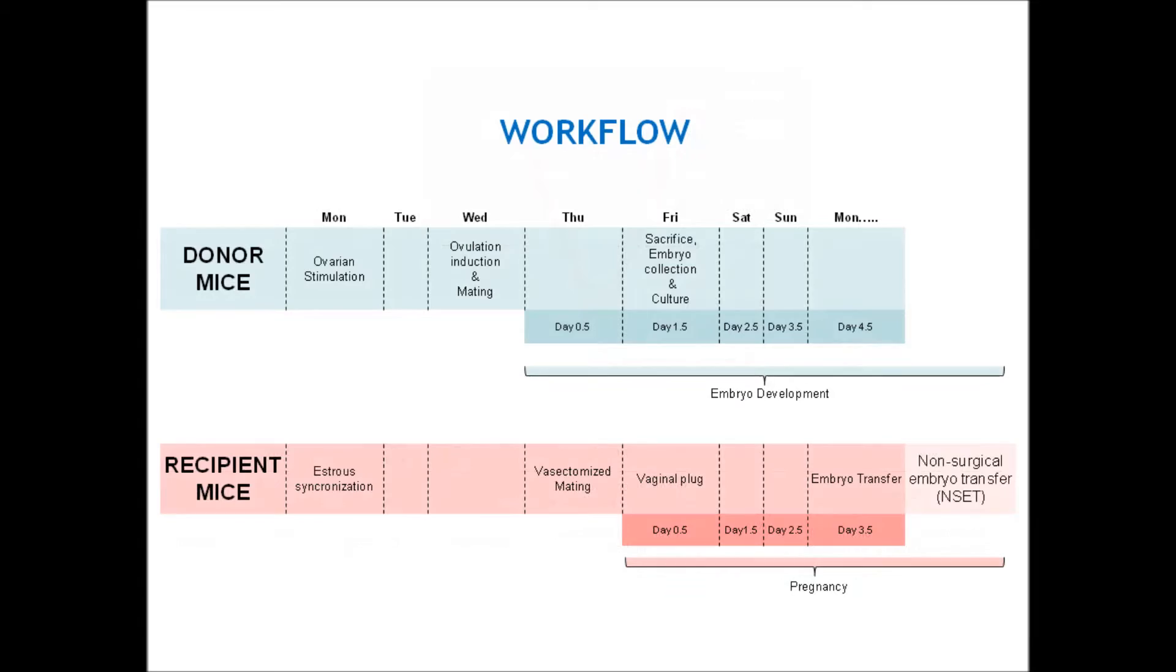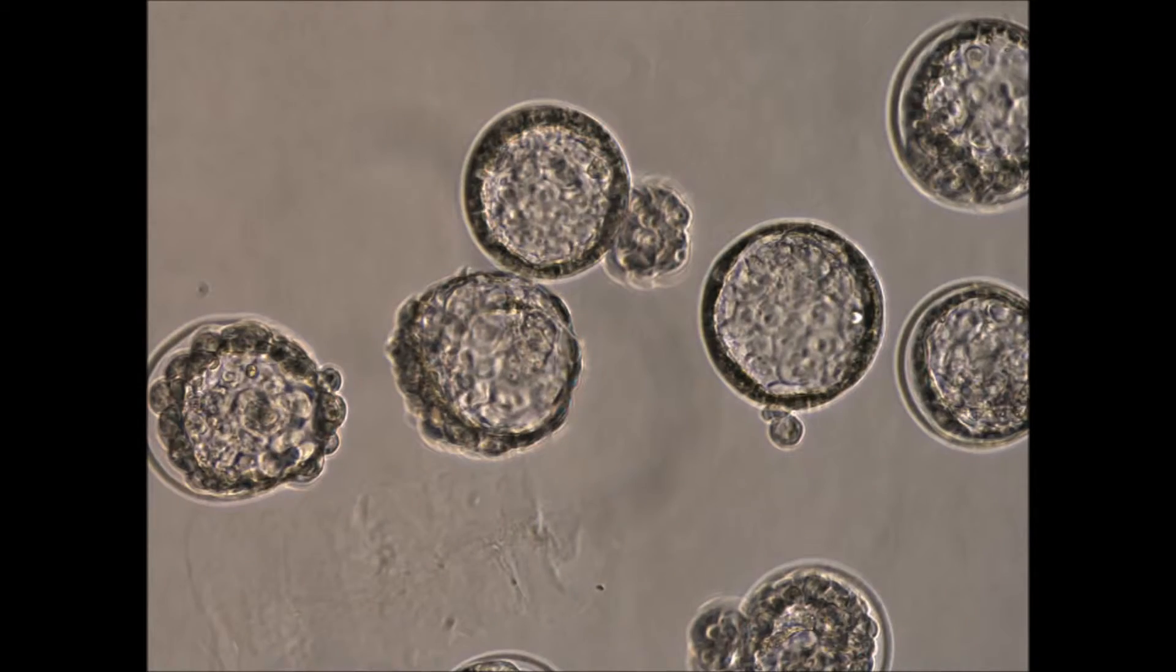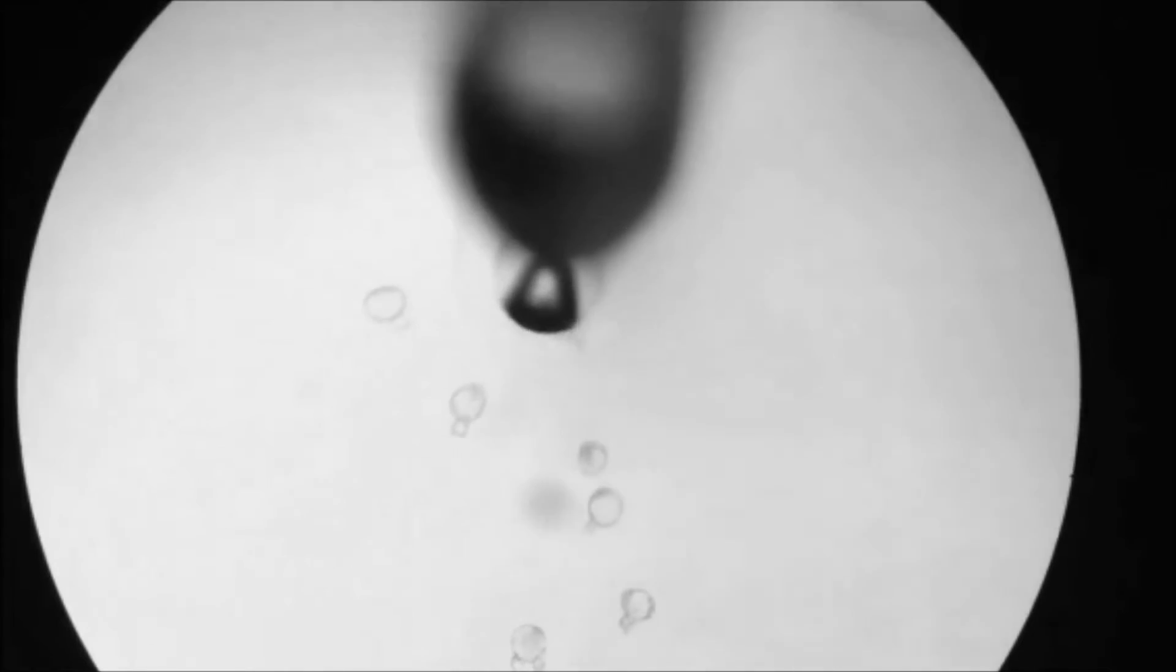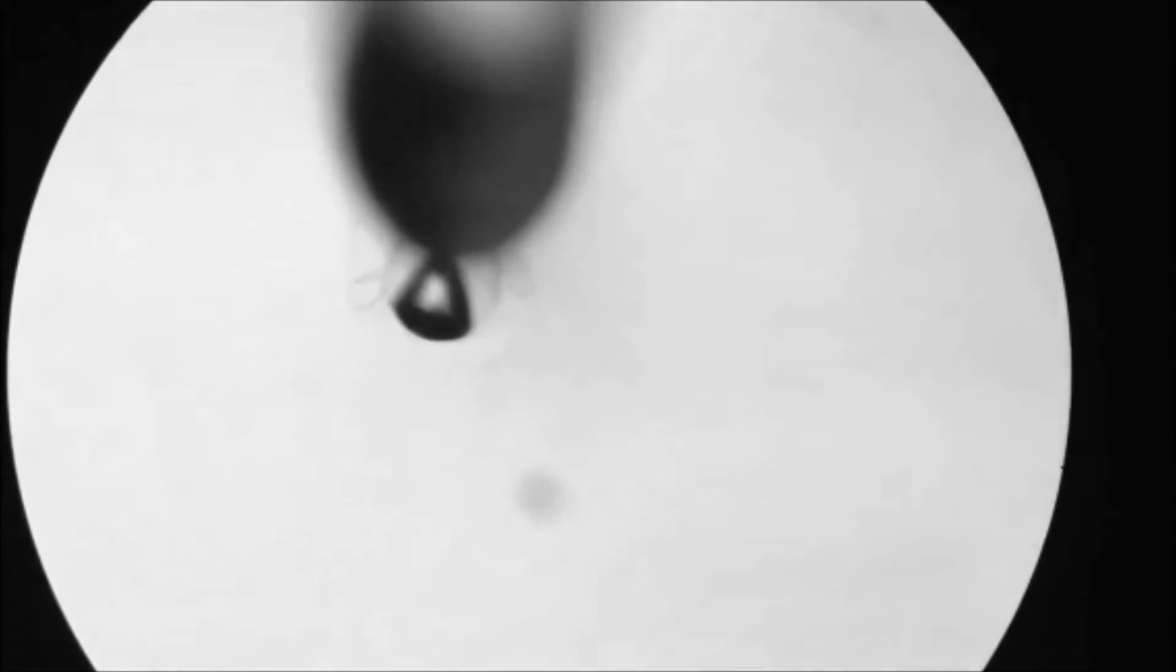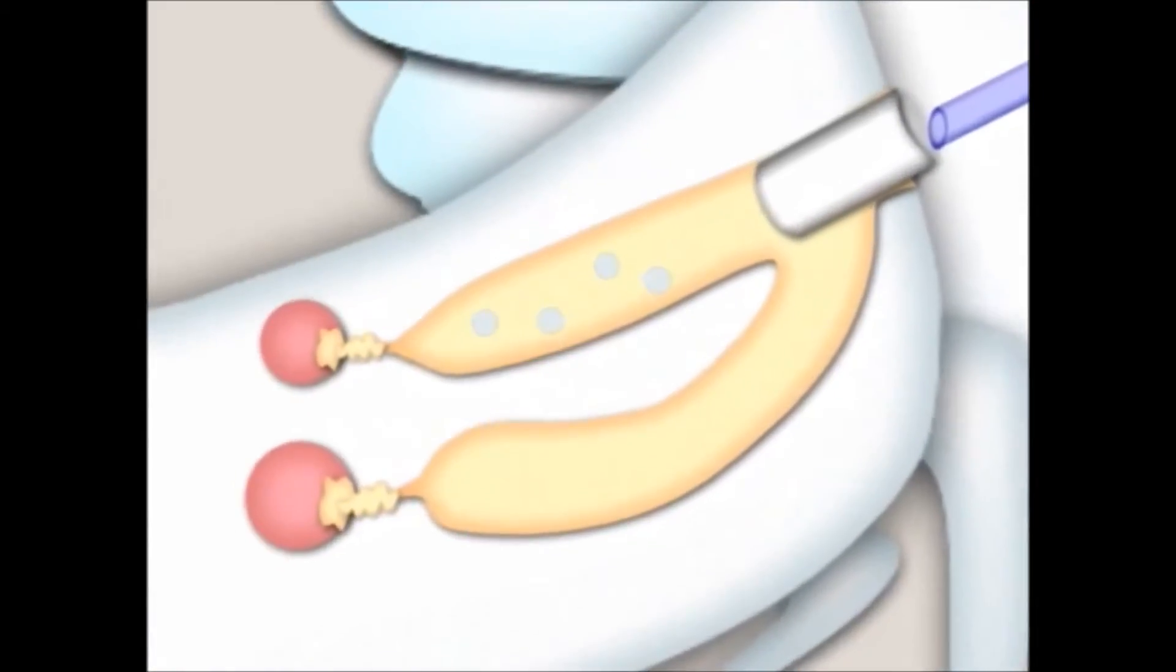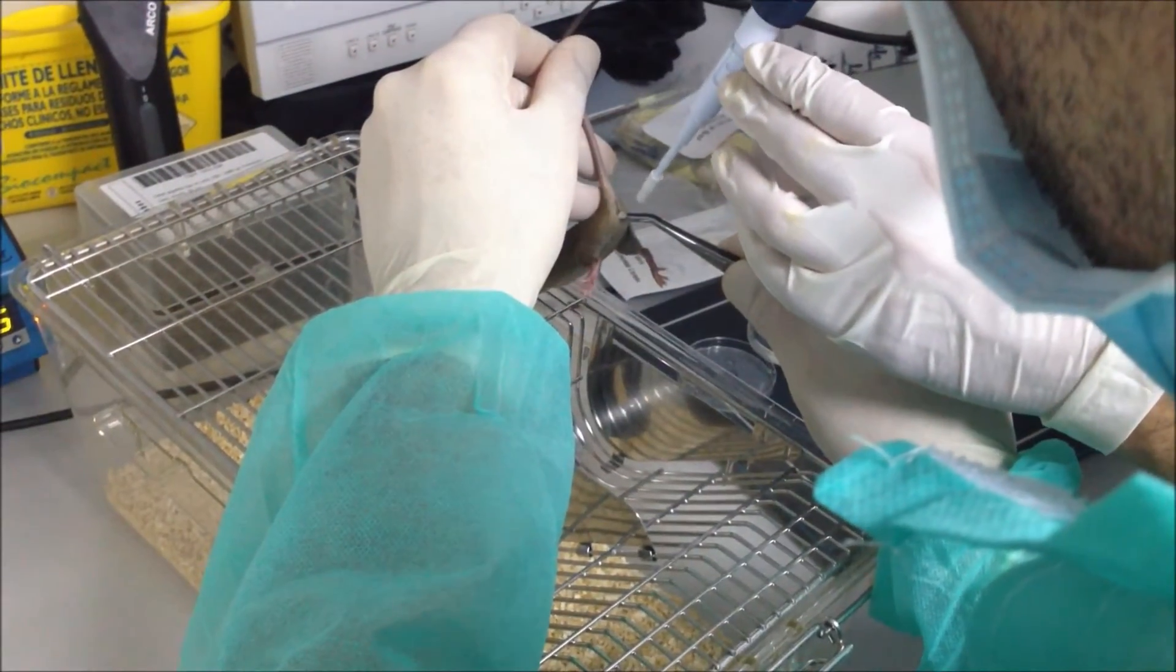On Monday, the hatching embryos are at 4.5 days of development and they should be transferred using a non-surgical embryo transfer system commercialized by Paratechs. A small speculum is introduced into the vagina of the recipient mice and 10 to 15 embryos are taken up into a transfer pipette in 2 microliters of the culture medium. The tip of the pipette is then fully introduced via the speculum and the embryos are released into one of the uterine horns.